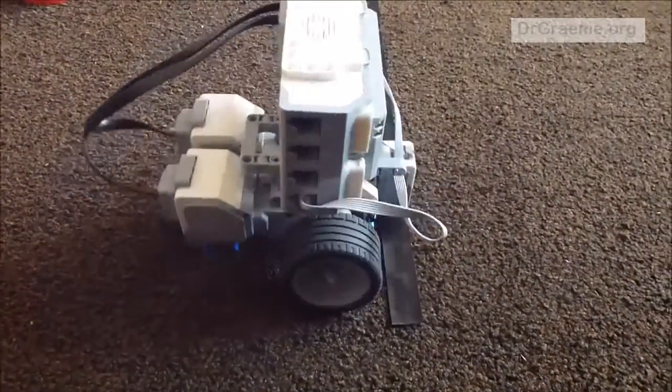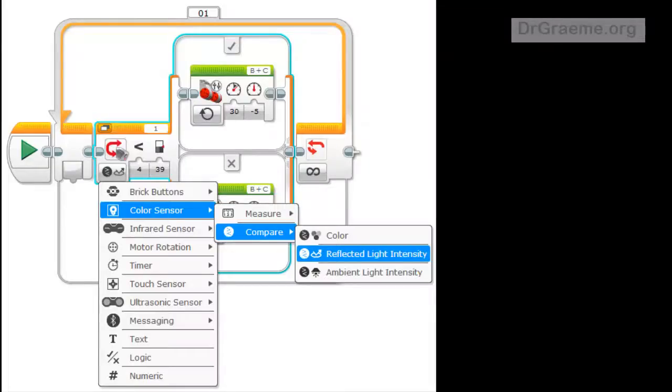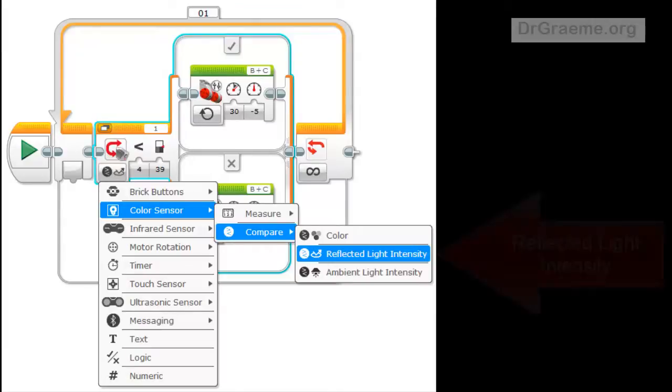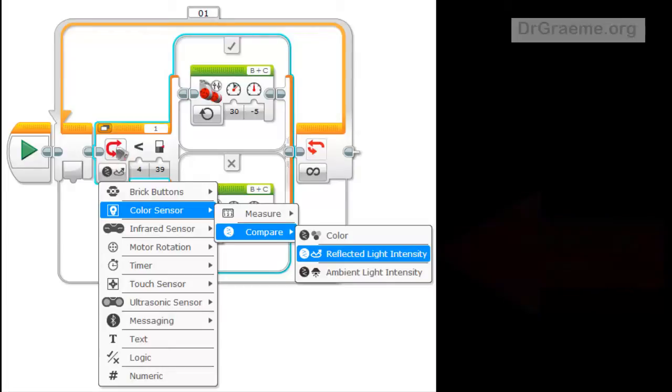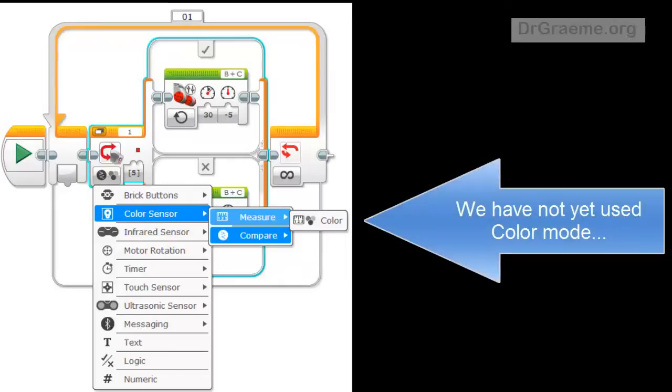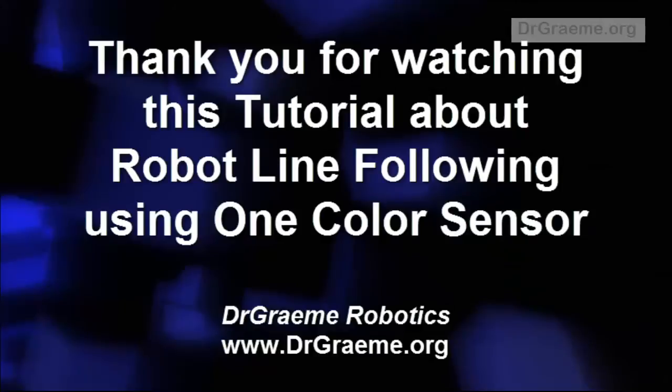With that surprise we'll end this tutorial on line following with colored tape. Note that we have only used the color sensors in reflected light intensity mode in these tutorials. We have not used them in color mode. That will be the subject of another tutorial later. Thank you very much for watching this tutorial and have fun with your robots.